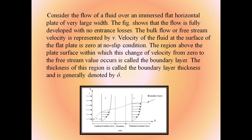The flow in the boundary layer starts as smooth and streamlined, called laminar flow. At some distance from the leading edge, the flow turns chaotic, called turbulent, characterized by velocity fluctuations and highly disordered motion. The transition from laminar to turbulent occurs over a transition region. The velocity profile in the laminar region is approximately parabolic and becomes flatter in turbulent flow. The turbulent region consists of three sub-regions: the laminar sub-layer where viscous effects dominate, the buffer layer where both laminar and turbulent effects exist, and the turbulent layer. This intense mixing enhances heat and momentum transfer and increases the friction force and convection heat transfer coefficient.